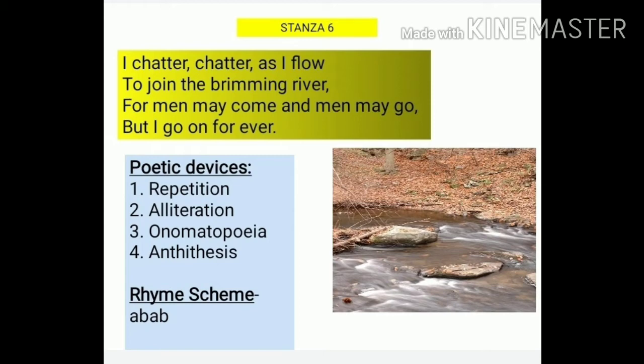'For men may come and men may go, but I go on forever.' The last three lines are repeating — they were repeated in stanza three, this is stanza six, and they will also be repeated in stanzas nine and thirteen. The brook wants to tell us that men are born and they even die, but it keeps flowing and goes on forever. It means that men are transient, temporary, mortal, but the brook is eternal.